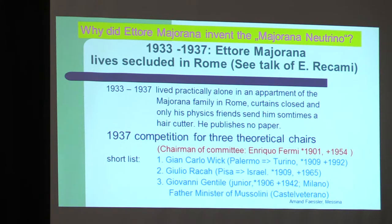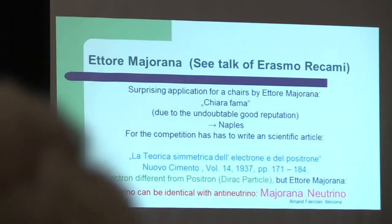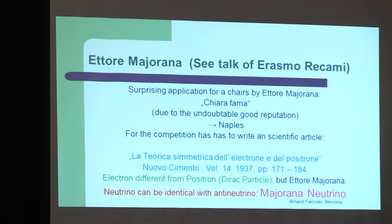Giovanni Gentile died already early in 1942. You know that his father was professor of philosophy, and also minister of Mussolini, and the family is from Sicily, from Castelvetrano. And that may be important, because when this was known to Ettore Majorana, he finally applied for a chair. But the Enrico Fermi committee had already given away all three chairs. So there was no place anymore for Ettore Majorana.